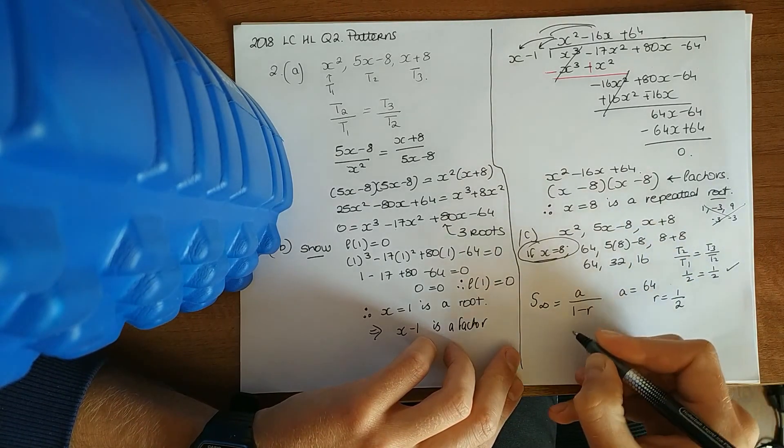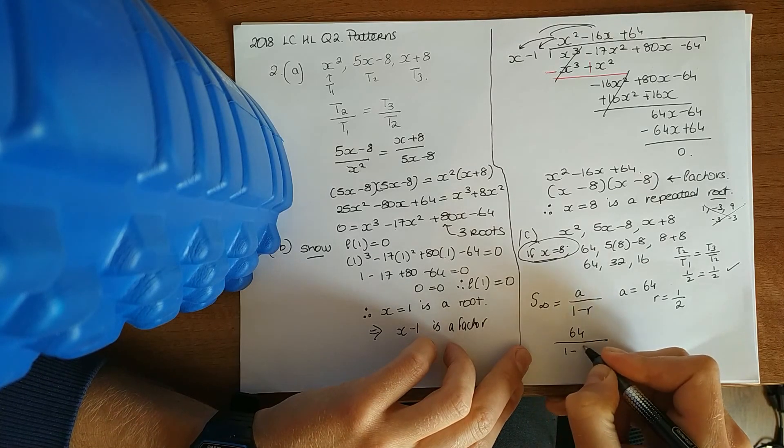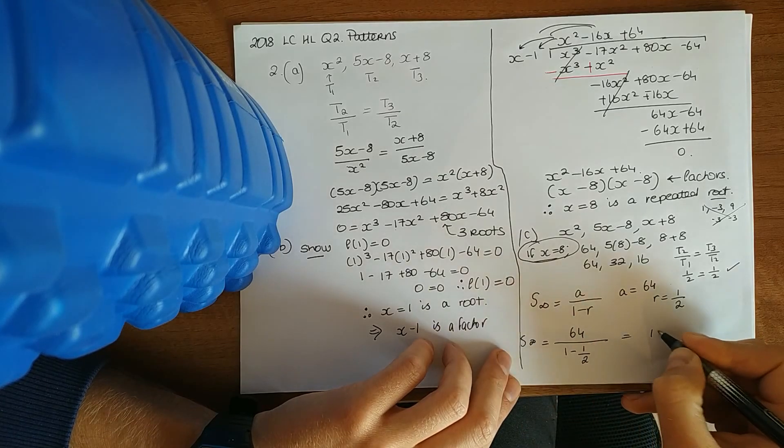R is the common ratio, which is a half. And substitute those values in. So 64 over 1 minus a half. 64 over a half. 128.